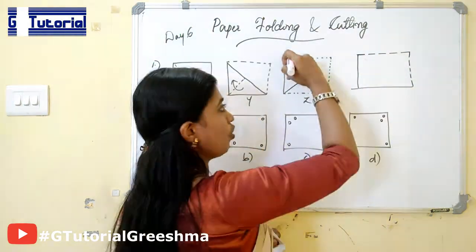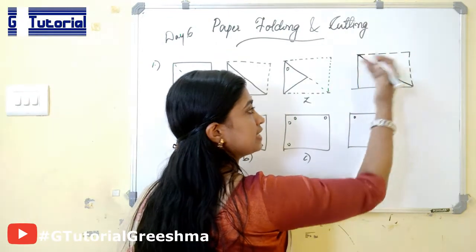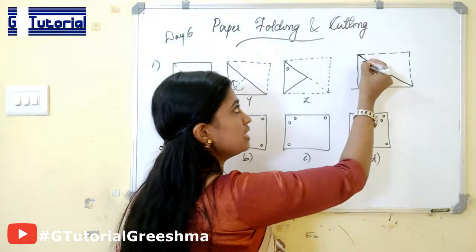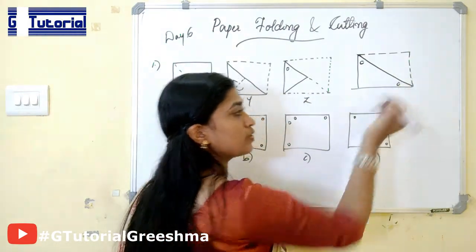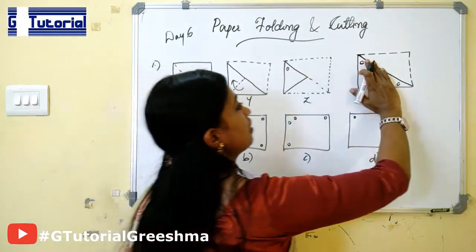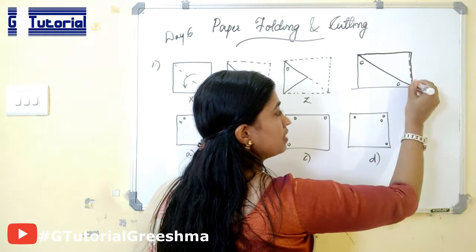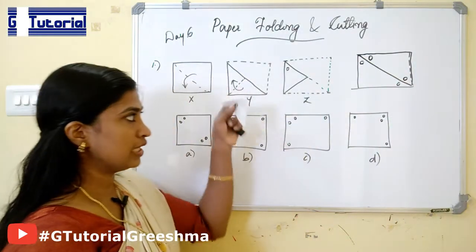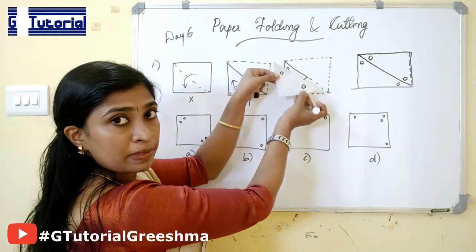We are opening this fold while keeping the paper still in the folded manner. This cut will be present, and when we open this fold, it will be present here also. Then we are opening it again in this manner. Here we have opened this fold, so this cut will be present here and here also. This is our folded figure — first opening in this manner, so the cut will be present here also.